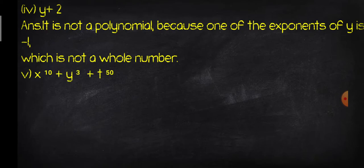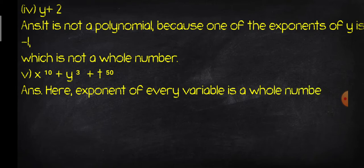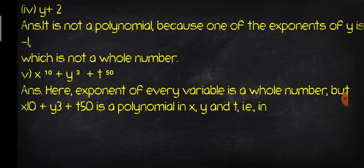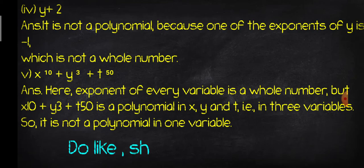Fifth part: x^(√10) + y^(√3) + t^(√50). This is a polynomial in x, y, and t — that is, in three variables. So it is not a polynomial in one variable, because here there are three variables. They asked for one variable, so it does not qualify.